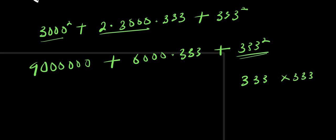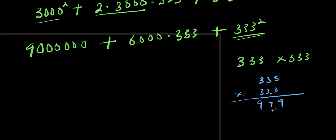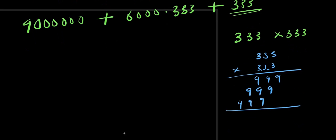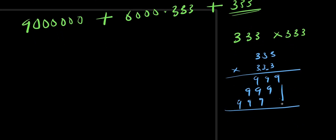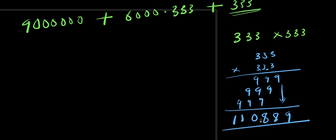Let's multiply 3333 times 3333 using long multiplication. Multiplying digit by digit: 3 times 3 gives 9 repeatedly across each row. Adding up all the partial products, we get: 9, then 18 carry 1, then 28 carry 2, then 11. So 3333 squared equals 11,108,889.